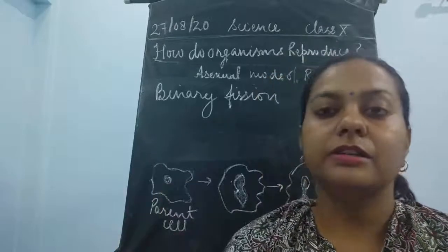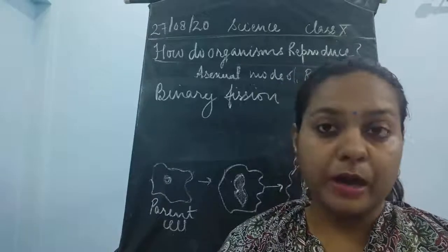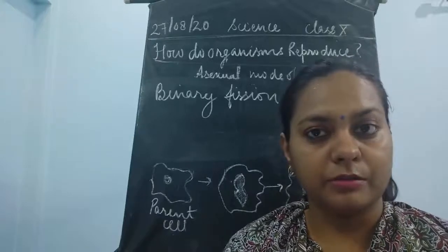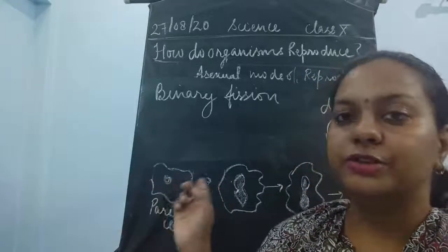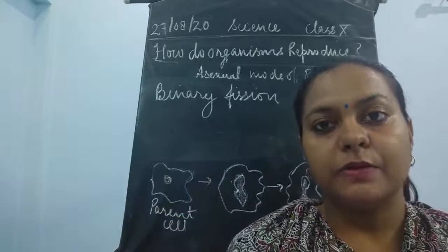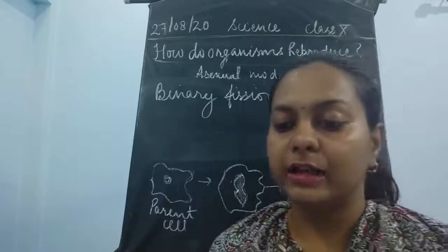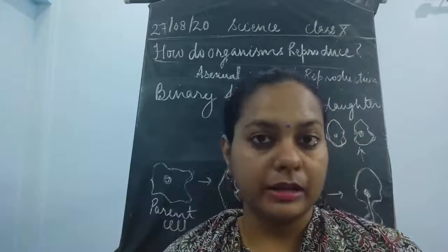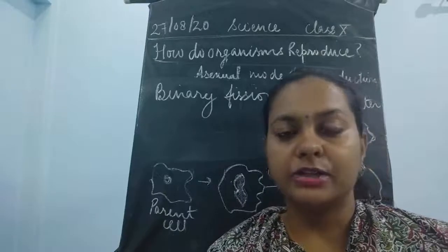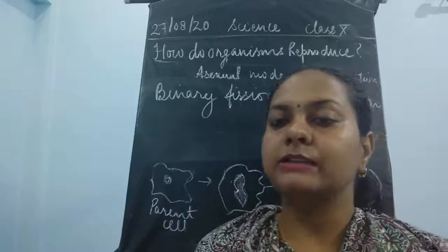We already discussed one mode of asexual reproduction — fission — in which organisms like amoeba divide into two parts, known as binary fission. We have also discussed the diagram on the board. The different modes of asexual reproduction we need to study are: fission, budding, spore formation, regeneration, fragmentation, and vegetative propagation. We covered fission first.